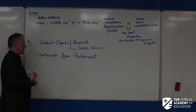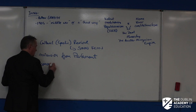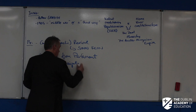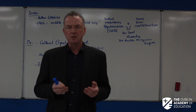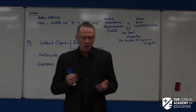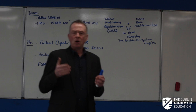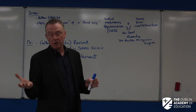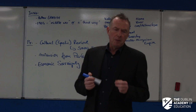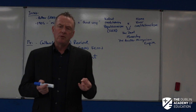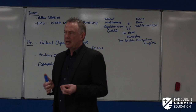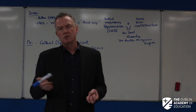Griffith was also particularly interested in economic sovereignty — the idea that you need economic independence in order to have political independence. This is underplayed in discussions of the Irish Revolution. In the 1930s, we see de Valera use economic self-sufficiency as a form of an expression of sovereignty.